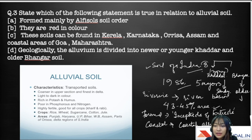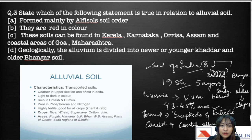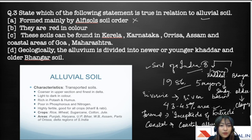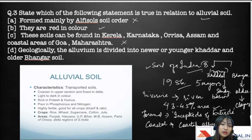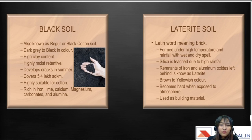Going back to the question — which statement is true in relation to alluvial soil? Option A says formed mainly by alfisols — this is wrong as it is formed by Inceptisols and Entisols. Option B says they are red in color — wrong, as alluvial soil is light to dark in color. Option C says found in Kerala, Karnataka, Orissa, Assam, and coastal areas of Goa and Maharashtra — also wrong. Option D says geologically the alluvium is divided into younger khaddar and older bhangar — this is correct. The right answer is D.